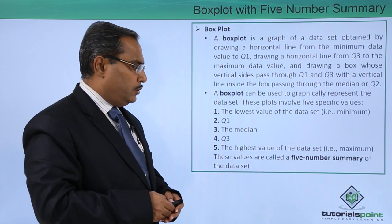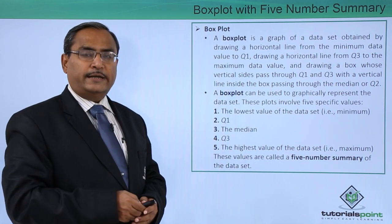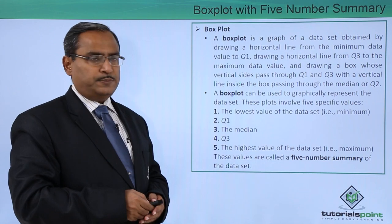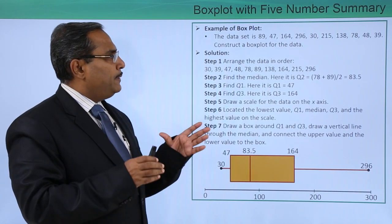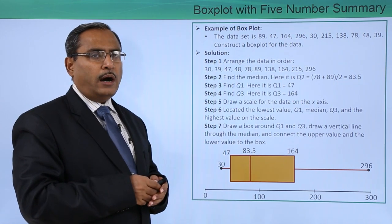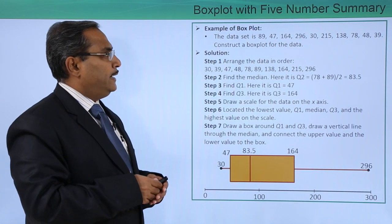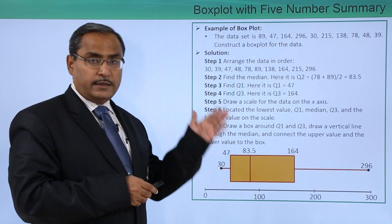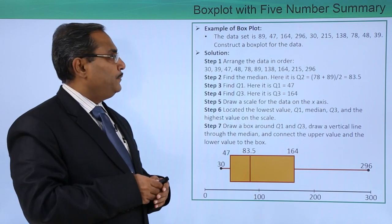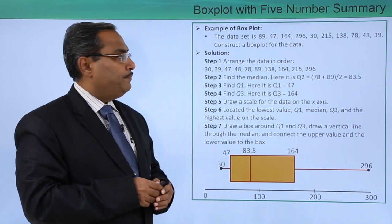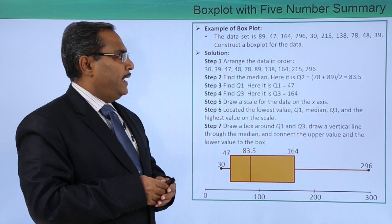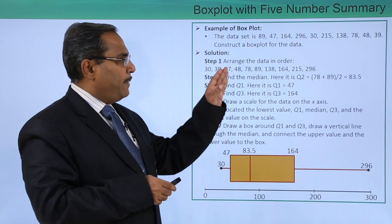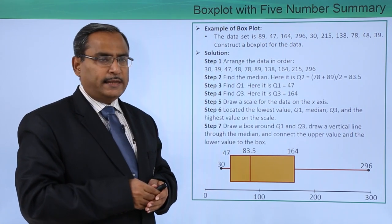These values are called a 5 number summary of the data set. To make the concept clear, we require one example to explain. Let us suppose we have one set of data on which we are supposed to draw a box plot. The data set is 89, 47, 164 and so on. This data is not sorted. Construct a box plot for the data. Step number 1: arrange the data in order. From the lowest value to the maximum value, we have arranged all this data in ascending order.